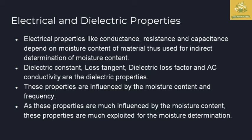Electrical and dielectric properties include the conduction, resistance, and capacitance of agricultural commodities with respect to moisture content. Electrical properties are mainly used for the indirect determination of moisture content in agricultural commodities. The dielectric constant, loss tangent, and dielectric loss factor are the dielectric properties observed in agricultural commodities. These properties are mainly influenced by moisture content and frequency, and are exploited for moisture determination in agricultural commodities.